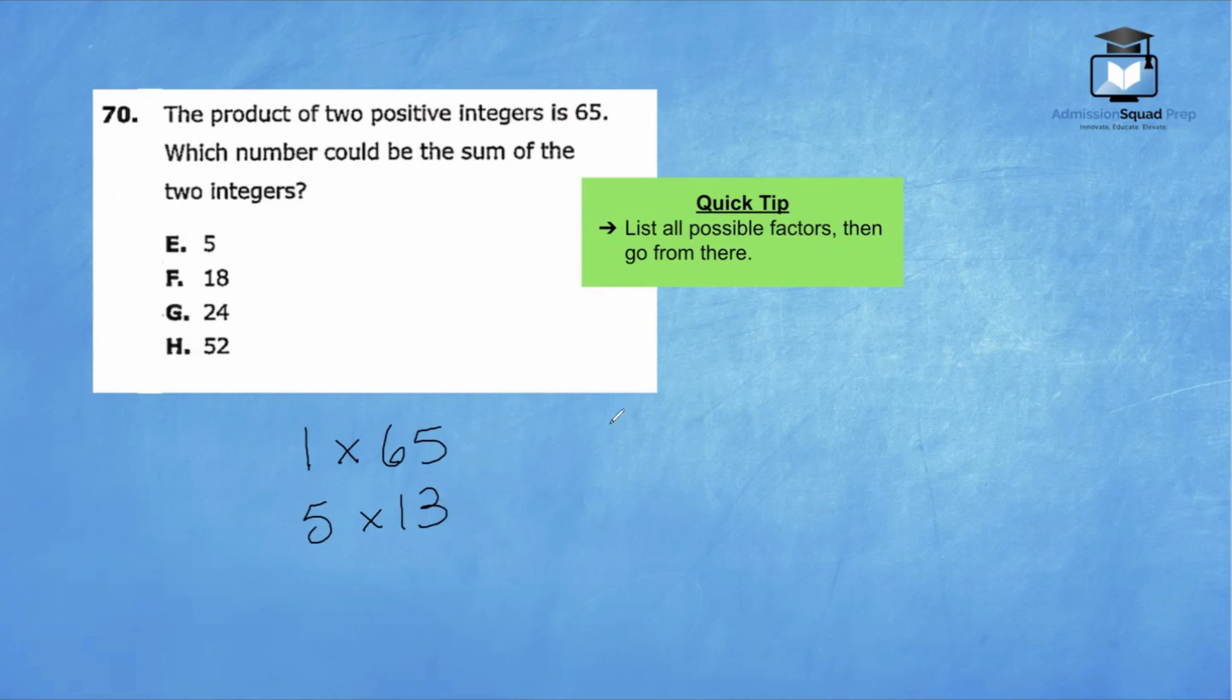The question states which number could be the sum of the two integers. So let's go ahead and add our two pairs. 1 plus 65 is 66. So that's one possible answer. And 5 plus 13 is 18. So that's the other possible answer. When we take a look at our answer choices, we can see that F is the correct answer.